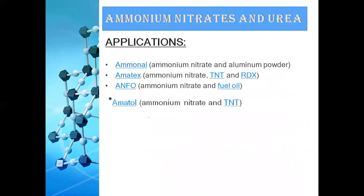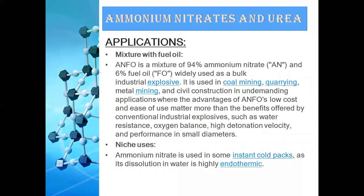Examples of explosives containing ammonium nitrate include astrolite, which contains ammonium nitrate and hydrazine rocket fuel, and another example is a mixture of ammonium nitrate and aluminum powder. ANFO is a mixture of 94% ammonium nitrate and 6% fuel oil, used as a bulk industrial explosive in coal mining, quarrying, and metal mining. Ammonium nitrate is also used in instant cold packs because its dissolution in water is highly endothermic.